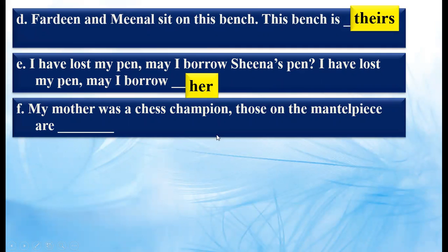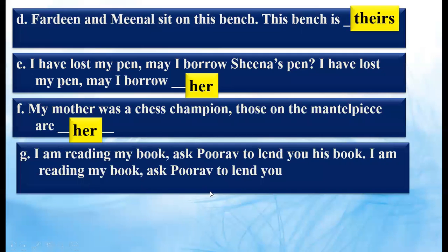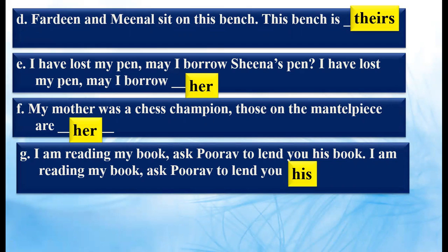My mother was a chess champion. Those on the mantelpiece are dash — we'll write 'hers' because the trophies on the mantelpiece are the mother's. Next: 'I am reading my book. Ask Purav to lend you his book.' — 'Ask Purav to lend you dash.' Purav is the name of a boy, so we will write 'his'. We cannot write H-I-S-S; it will be just 'his', because that particular book belongs to him.